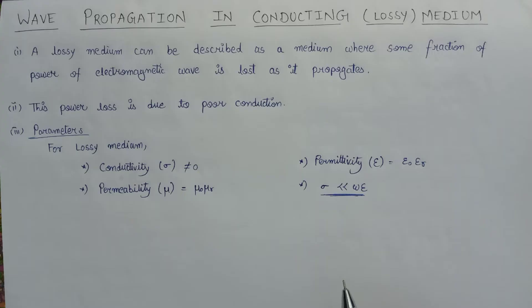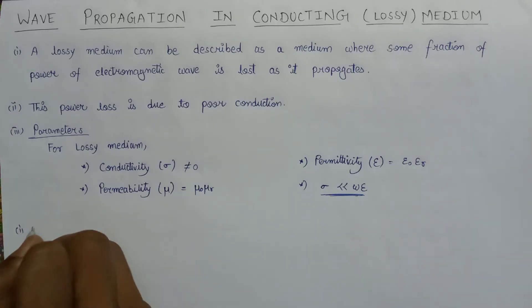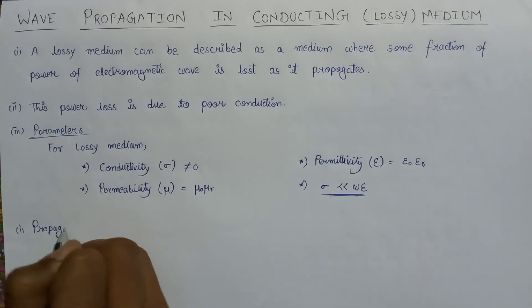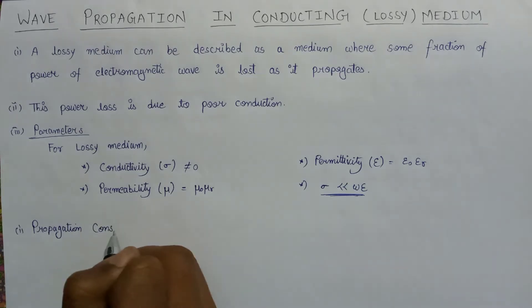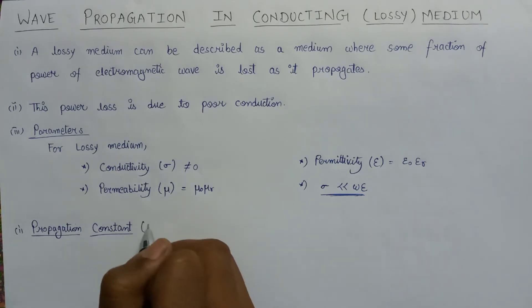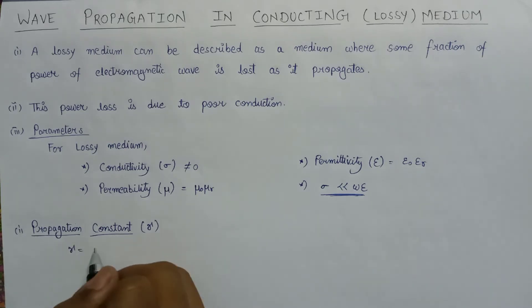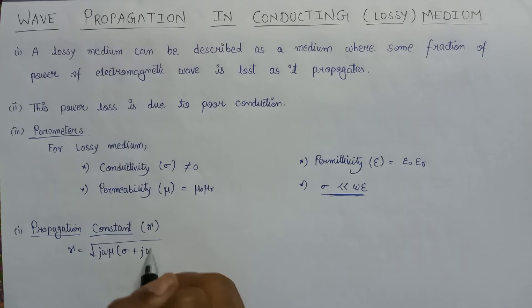Now let us look at the propagation constant, attenuation constant, phase constant, phase velocity, and intrinsic impedance of a wave. The propagation constant is always represented as gamma, and the expression for the propagation constant for a plane wave is: gamma equals the square root of j omega mu times (sigma plus j omega epsilon).